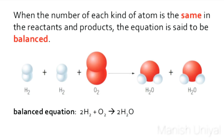For example, two hydrogen molecules react with one oxygen molecule to give two water molecules. So in the balanced chemical equation, four hydrogen atoms and two oxygen atoms will be in the reactant and the same will be in the product. The balanced equation is: 2H₂ + O₂ → 2H₂O.